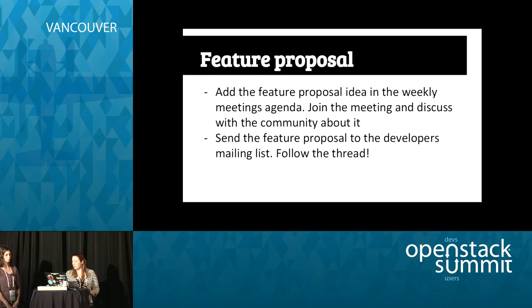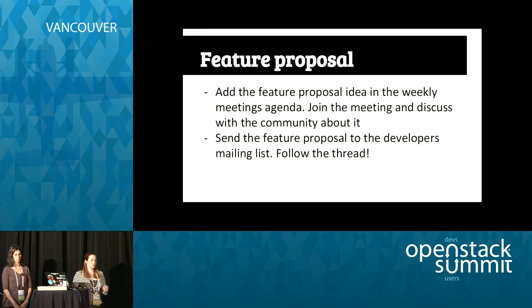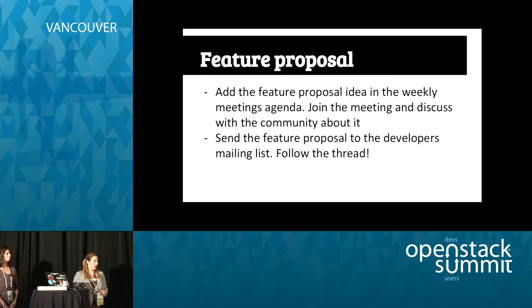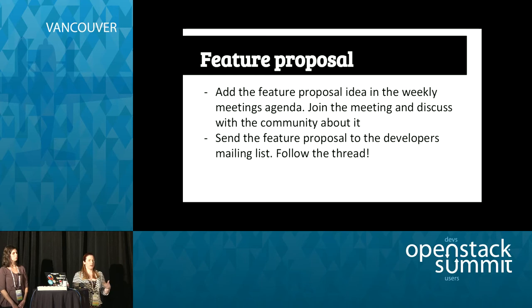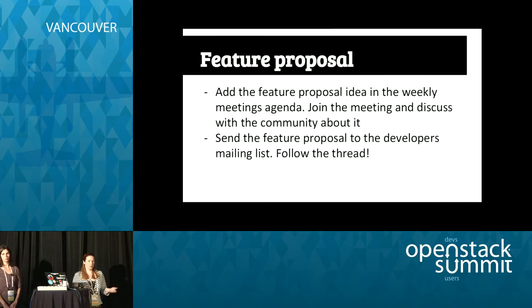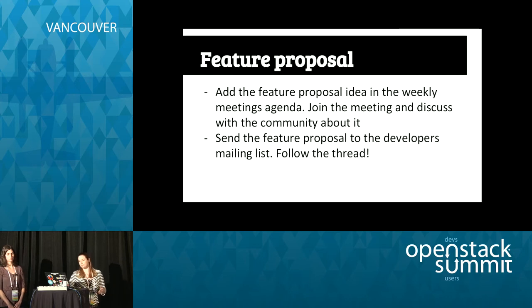At some point you're going to want to submit a feature proposal. One way to do this is to add an item to the agenda of the weekly meeting on IRC, which will allow you to bring it up and talk about it with the community. You can also, after that conversation, send out a proposal to the mailing list. Blueprints get created as part of this discussion. When you send something to the mailing list, make sure you follow the thread and can incorporate any feedback given.